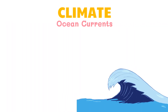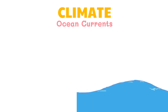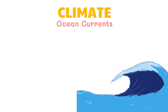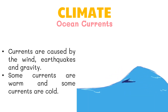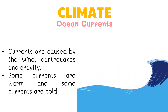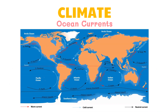Ocean currents move like rivers — they flow through the ocean in different directions. Currents are caused by the wind, earthquakes, and gravity. Some currents are warm and some currents are cold. This picture shows different loops of surface currents around the world. In the northern hemisphere, the current flows in a clockwise direction, while in the southern hemisphere, the current flows in a counterclockwise direction. These clockwise and counterclockwise movements of ocean currents are caused by the Coriolis effect.